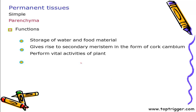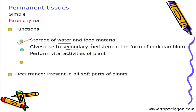The prime function of parenchyma is the storage of water and food material. They also give rise to secondary meristem in the form of cork cambium, which primarily occurs during secondary growth. As far as occurrence is concerned, they occur in all soft parts of the plant like cortex and other parts.